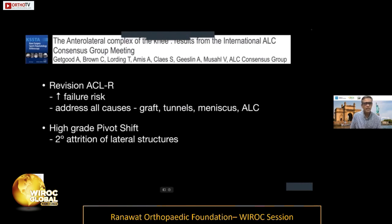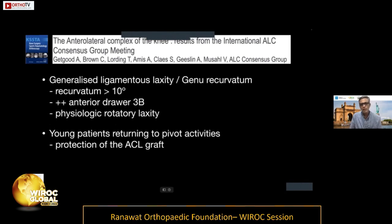The indications for performing a lateral procedure are: first, revision ACL cases, due to higher failure risk; second, patients with a high-grade pivot shift from secondary attrition of lateral structures; third, generalized ligament laxity or genu recurvatum greater than 10 degrees, to address physiologic rotatory laxity that is harmful to the ACL graft; and fourth, in my practice, younger patients wishing to return to pivoting activities, to protect the ACL graft.